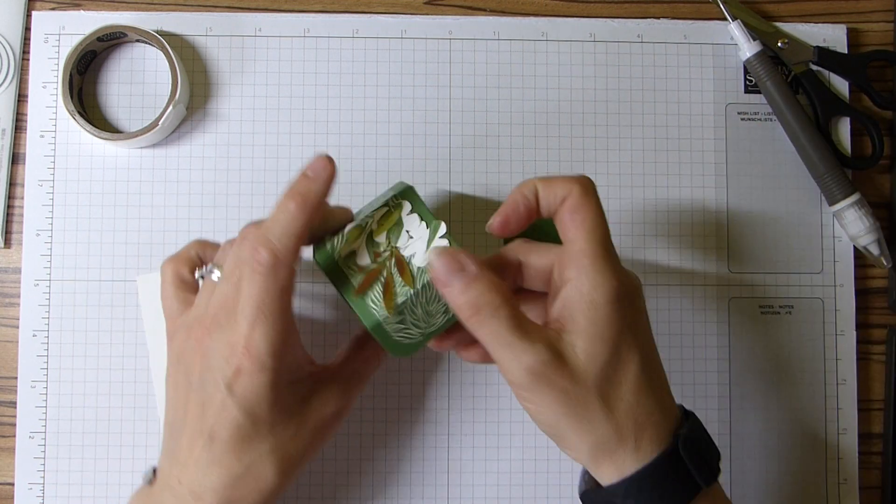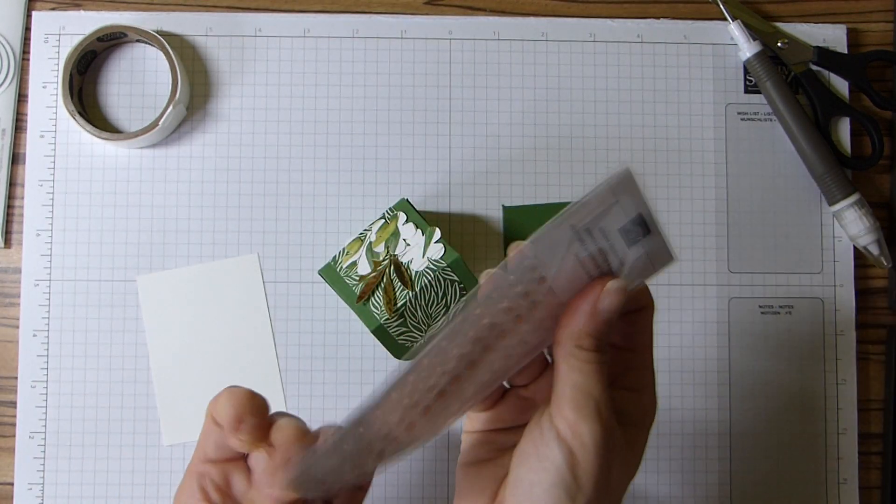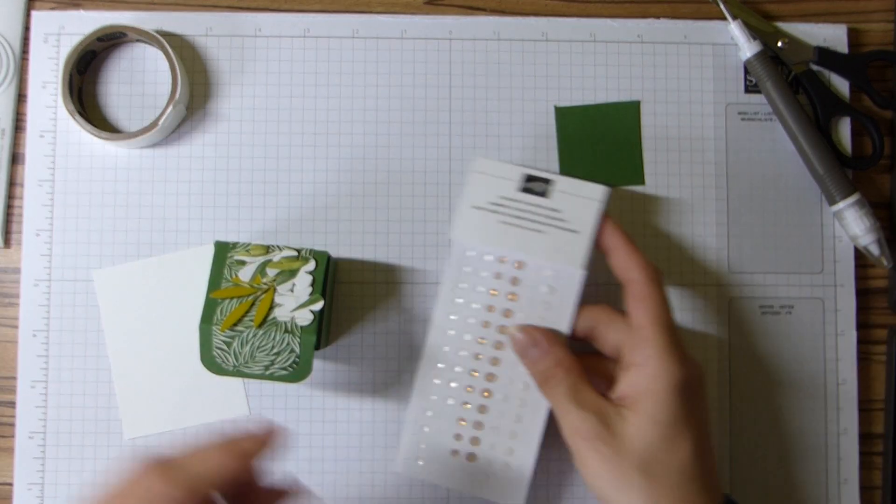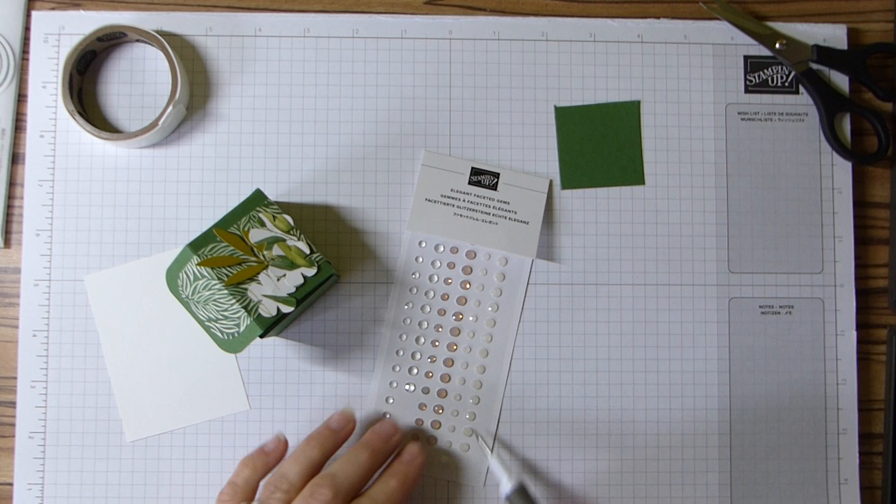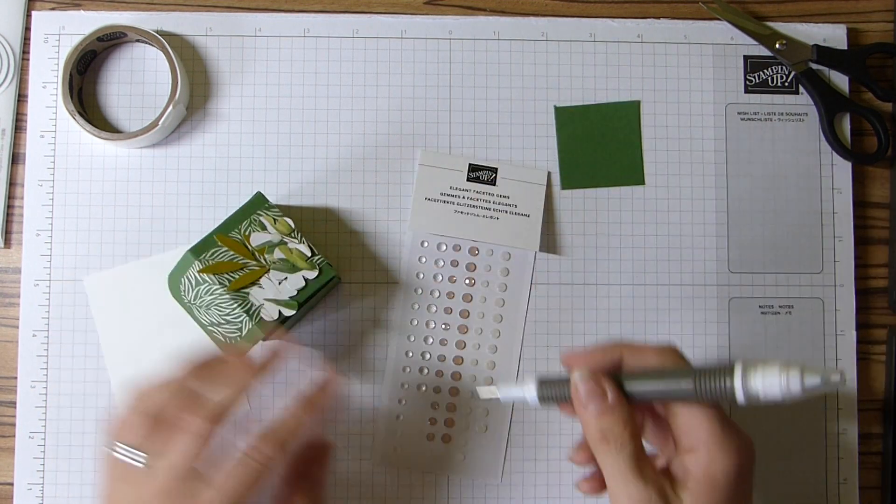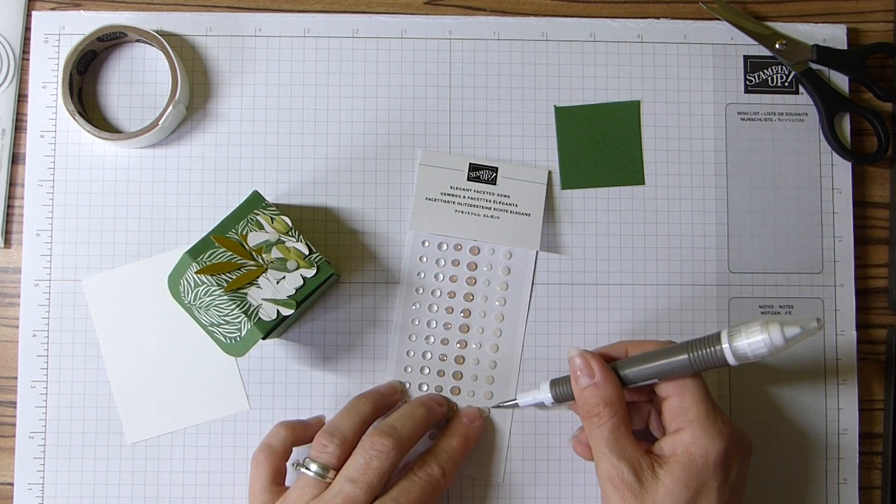And then these beautiful elegant faceted gems - I might actually go with the frosted ones on this one. Just to see how we look. Oh yes! I'm going to have to buy another packet of these, I think.